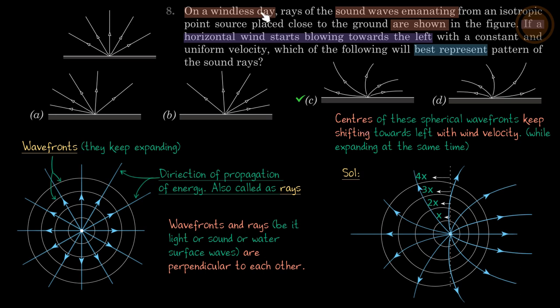On a windless day, sound waves emanate from an isotropic point source close to the ground as shown. Now if the horizontal wind starts blowing towards the left, which of the following best represent the pattern of sound rays?